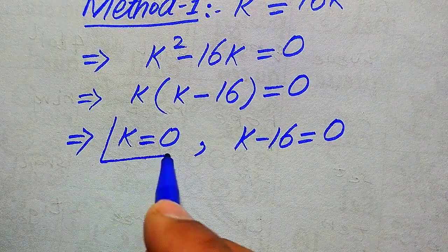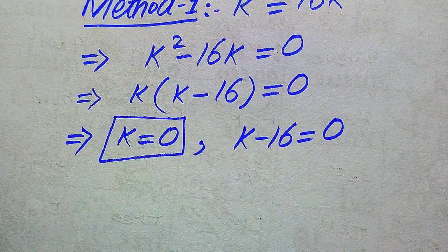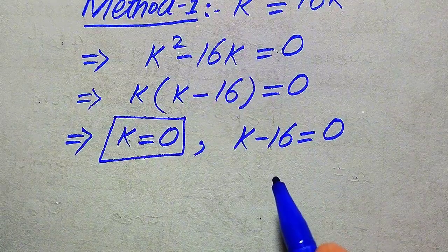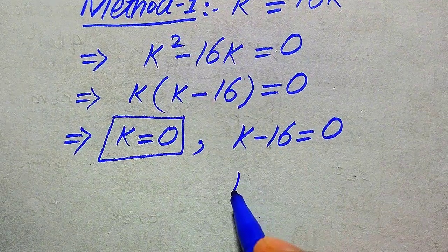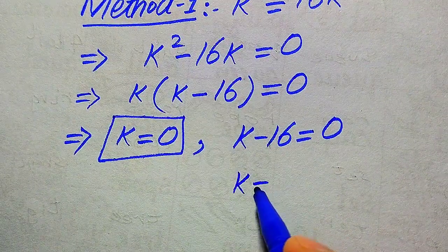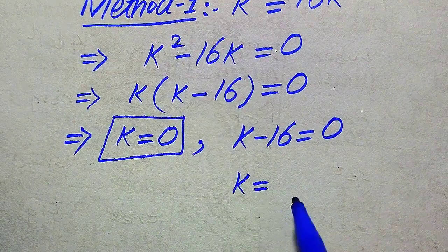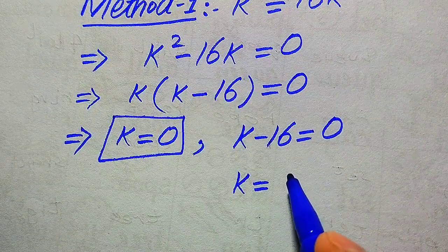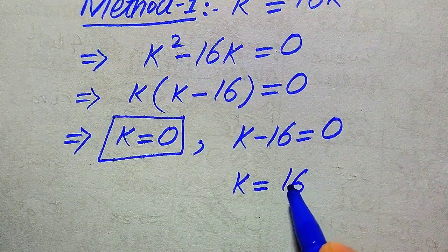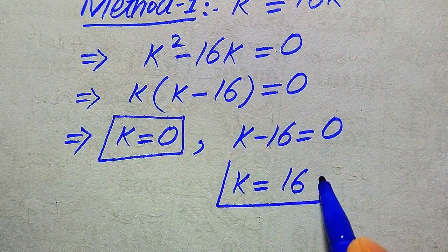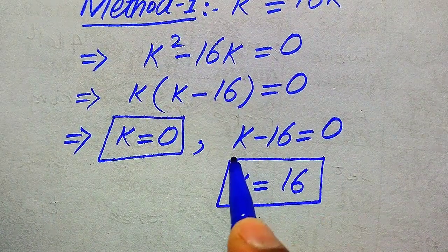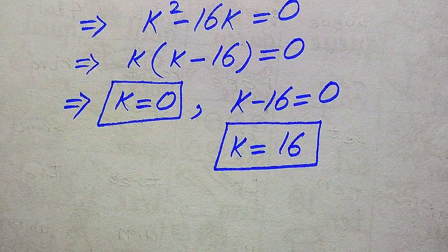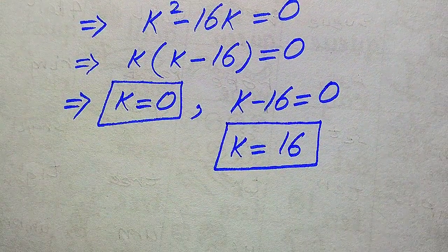So k equals 0 is our first root of the given equation. To find the other root, we solve k minus 16 equals 0, which gives k equals 16. From the first method, we get these two roots of the given equation.